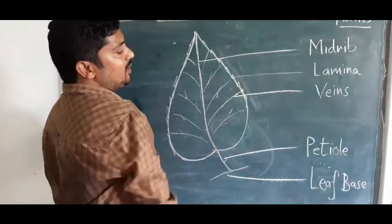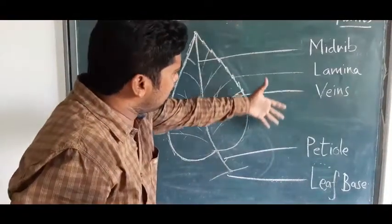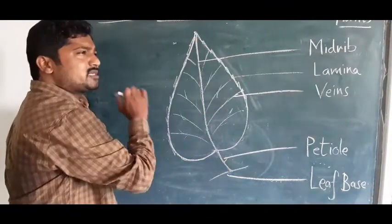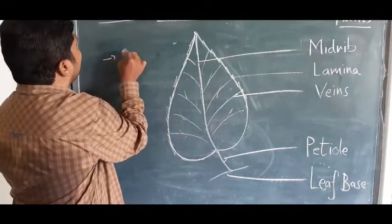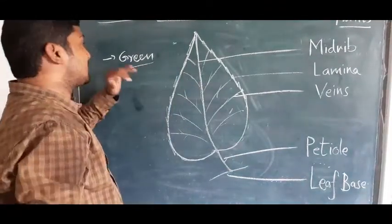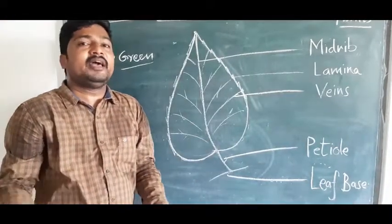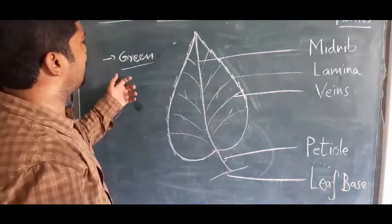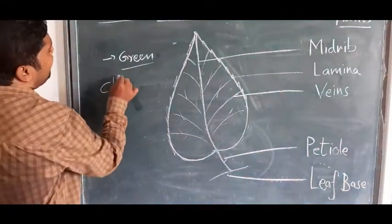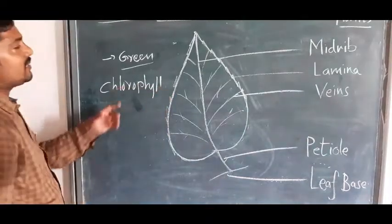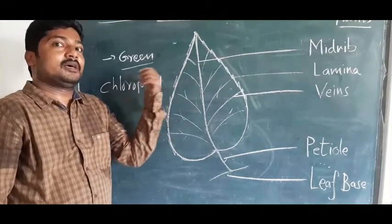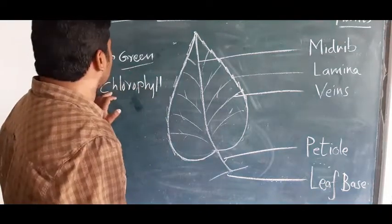When you look at the entire leaf, most plants have green-colored leaves, though not all plants have green leaves. The majority are green. Why are leaves green? It is because of a pigment called chlorophyll. Chlorophyll is present in the leaves, and due to this pigment they appear green in color. This chlorophyll plays a major role in photosynthesis — plants prepare their own food through this process, and they are called autotrophs.